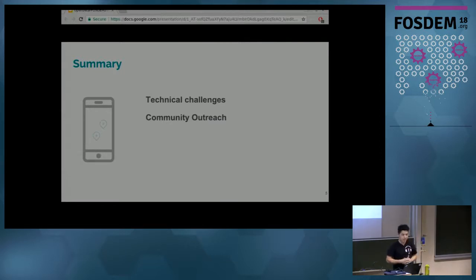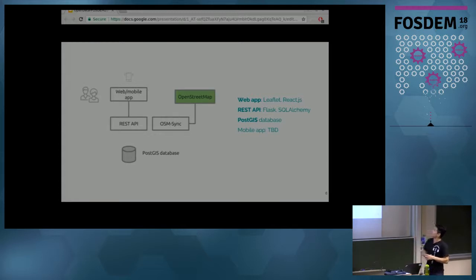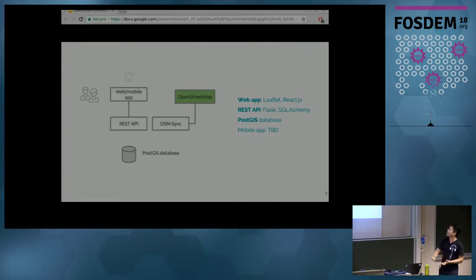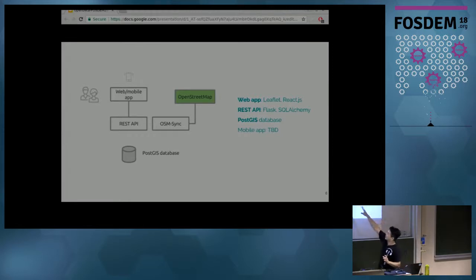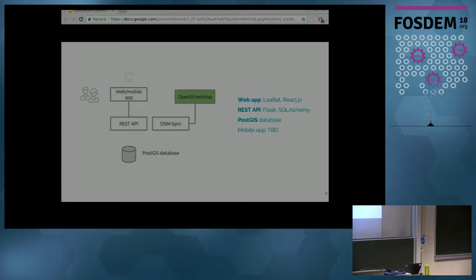I'll cover one technical challenge and one non-technical challenge — how to convince the community to contribute. The web app is built with Svelte and React, the back end is a REST API with Flask and SQLAlchemy, the usual suspects, and a PostGIS database. I envision the database as a staging area where people can input and edit data, and once it passes community validation we can push it into OpenStreetMap.